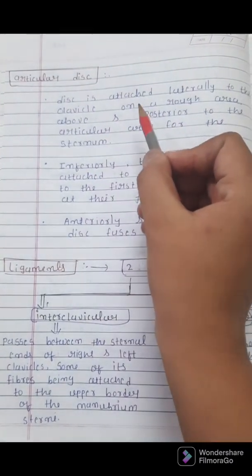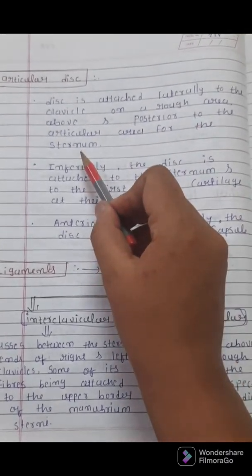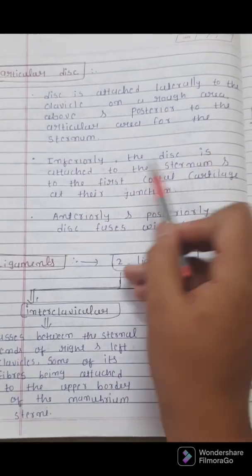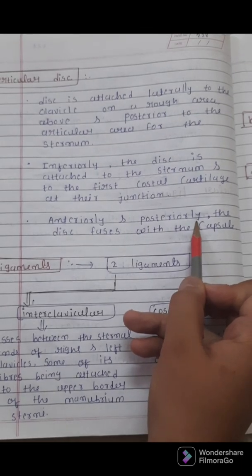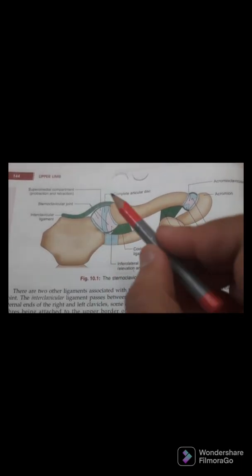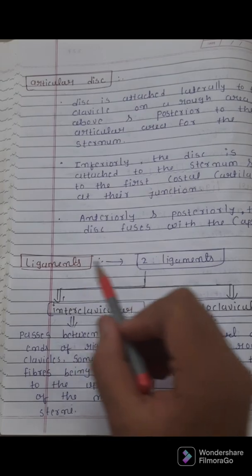The articular disc is attached laterally to the clavicle on a rough area above and posterior to the articular area for the sternum. Inferiorly, the disc is attached to the sternum and to the first costal cartilage at their junction. Anteriorly and posteriorly, the disc fuses with the capsule.